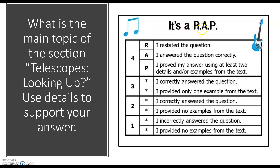You've seen this rubric quite a few times this year. This is how you're graded on a short writing response. To get a 4 out of 4, you need to first restate the question, then answer the question, and then prove your answer using two pieces of text evidence.